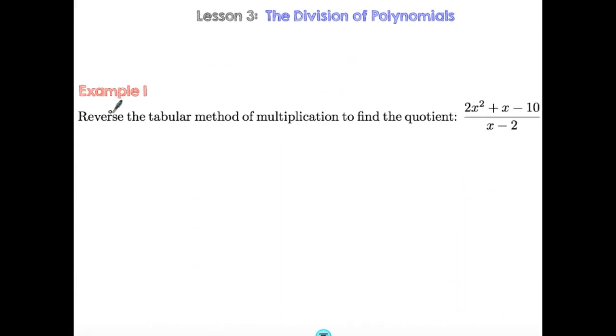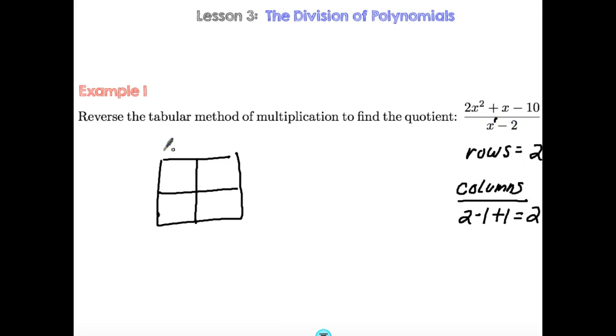Use the reverse tabular method of multiplication to find the quotient. So if I'm looking at the number of rows, I look at my divisor, and that power is one. So from the beginning, I have to add one to that to get the number of rows. So I need two rows. My columns, the columns, it's a power of two. That's the highest power in my dividend. I subtract off the power of the denominator, which is one, and then I add one. So in this case, your answer is going to be two. So this is a two by two.